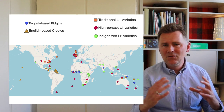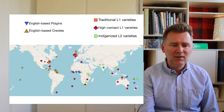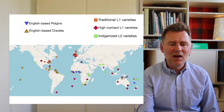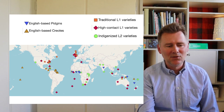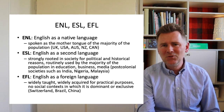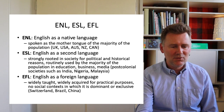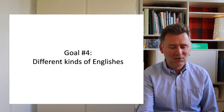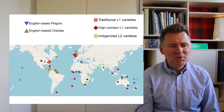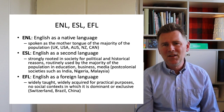Another way of dividing Englishes into categories is what you see in the E-Wave Atlas. The creators distinguish between traditional L1 varieties (corresponding to ENL), high-contact L1 varieties such as AAVE and Maltese English (also ENL), indigenized L2 varieties (corresponding to ESL varieties), and pidgins and creoles — which don't really map onto the EFL category. So there are different ways of categorizing Englishes, and we'll go over a couple of them to see how they line up and disagree with one another.